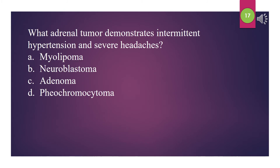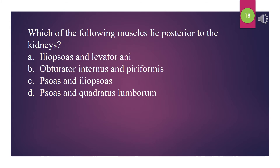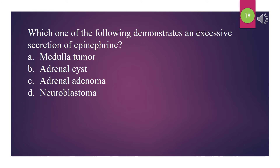What adrenal tumor demonstrates intermittent hypertension and severe headaches? A. Myelolipoma. B. Neuroblastoma. C. Adenoma. D. Pheochromocytoma. The answer is D: Pheochromocytoma. Which of the following muscles lie posterior to the kidneys? A. Iliopsoas and levator ani. B. Obturator internus and piriformis. C. Psoas and iliopsoas. D. Psoas and quadratus lumborum. The answer is D: Psoas and quadratus lumborum.